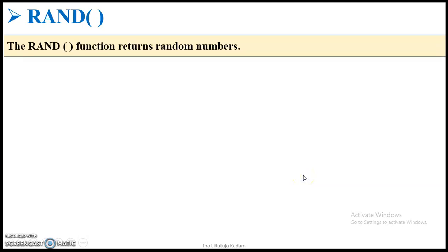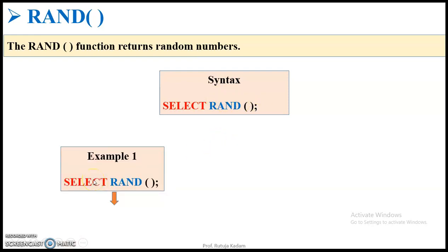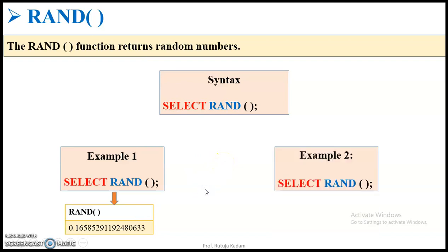The last function is the random function, which is used to return random numbers. Every time this function is called it produces a different random number. The syntax is: SELECT RAND(). Each time you run this query it will generate a different random value.